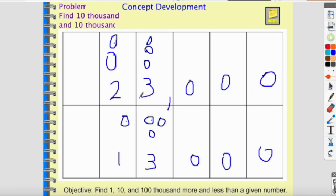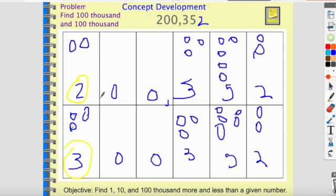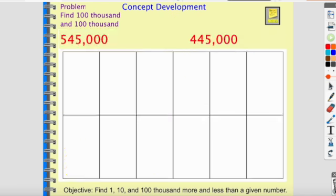In our previous examples, two went down to one or up to three when I added or subtracted a thousand, ten thousand, or a hundred thousand. You need to understand there is a pattern to all of this — the pattern is how that specific place value spot goes up and down. For example, if I have the number five hundred forty-five thousand and four hundred forty-five thousand, you can see the pattern forming.